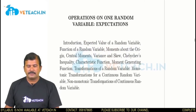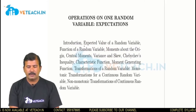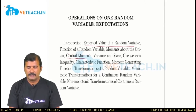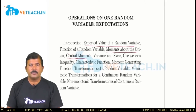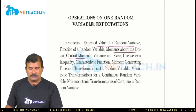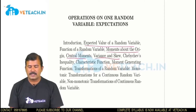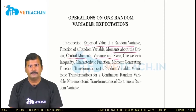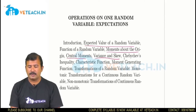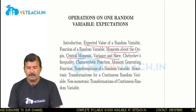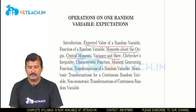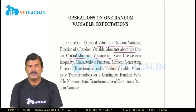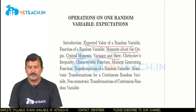Coming to the contents of the second unit: expected value or mean value of the random variable and its properties, central moments and moments about the origin. The immediate applications of the expectation are the moments. Then variance and skewness — these are second and third order moments. Different inequalities useful in probability and random variables, that is Chebyshev, Markov, and other inequalities. Two important functions that describe the moments are the characteristic function and moment generating function.